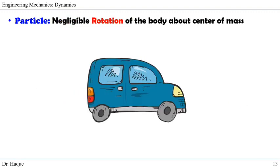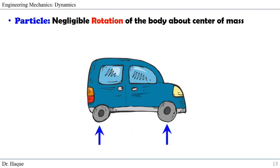Finally, we can assume a body as a particle when we can assume negligible rotation of the body about the center of mass. We assume a body as a particle only when we can neglect the rotation of that body. If we are to consider the rotation of the car, we cannot take the reaction force towards the center of mass — instead, we have to take the reaction force at both tires. Those are the conditions under which we assume the body as a rigid body, which will be the topic of our next video on the concept of rigid body in engineering mechanics.